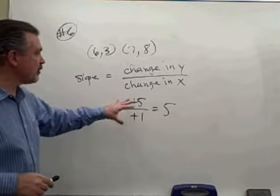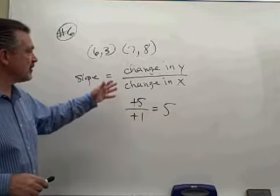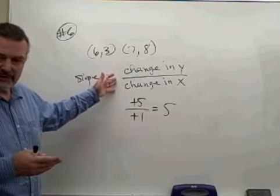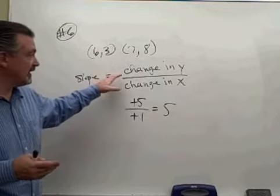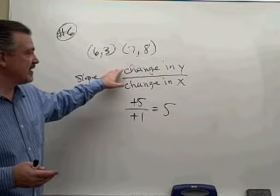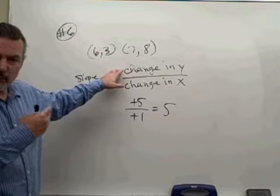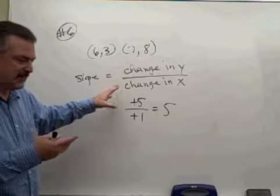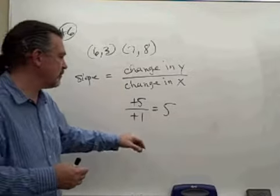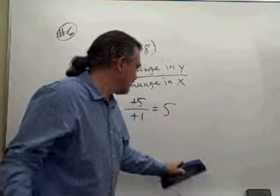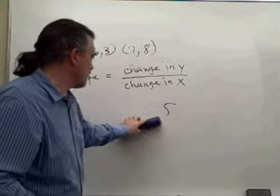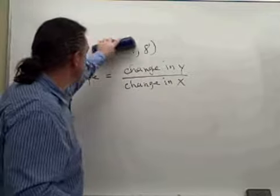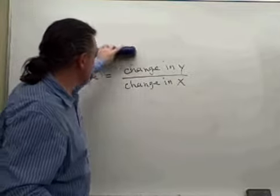Slope can be determined by examining two points that are on the line and thinking about how the Y changed and how the X changed between those two points. Let's look at another one from problem 6.